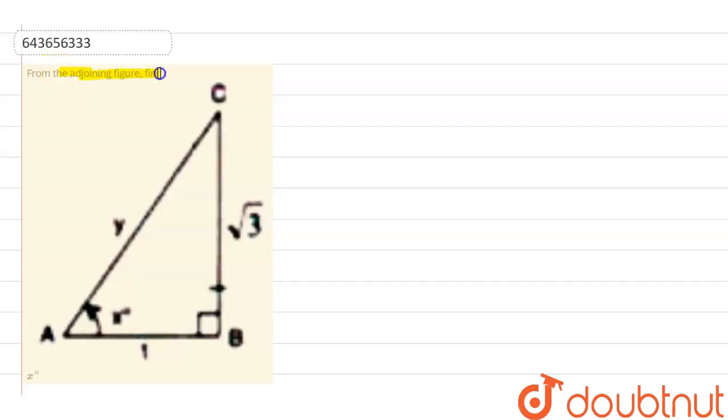Here, the question is from the adjoining figure: find x degree. So here you can see that we have a right angle triangle whose one angle is x degree. Here this is y, here this is square root of 3, and here it is 1.